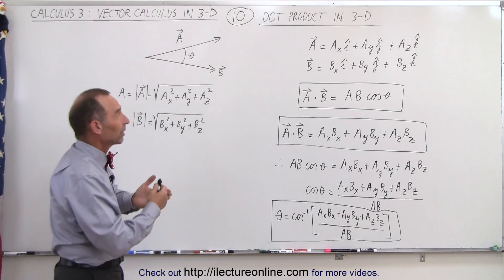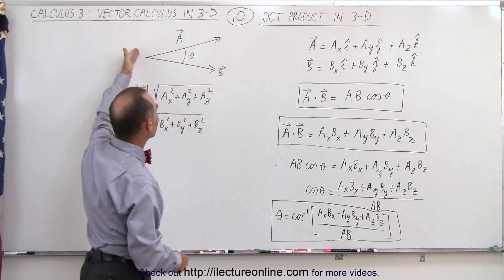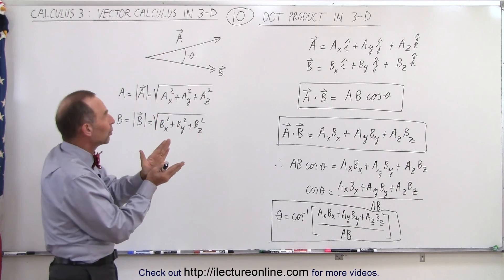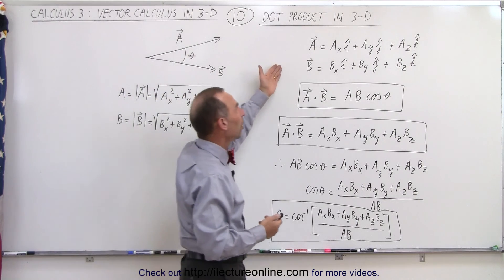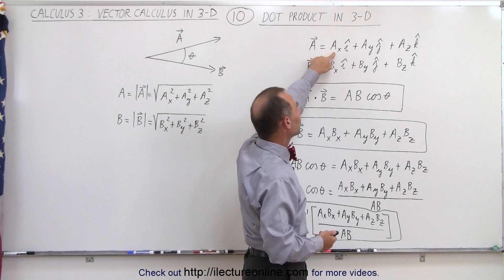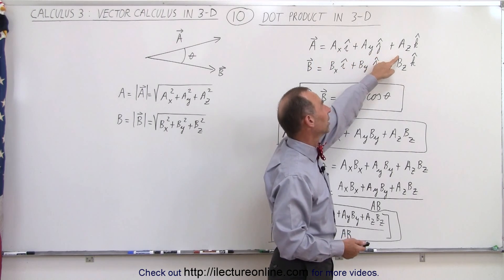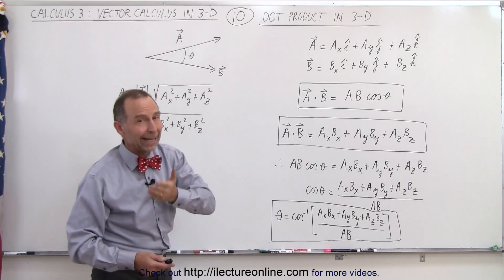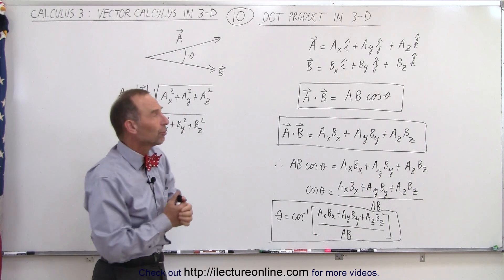So let's say we have two vectors, vector A and vector B. Here's a pictorial of the two vectors, and they have an angle between them. Let's call the angle between them theta. The vectors are defined as the sum of the x, y, and z components. We have the x component of A in the i-direction, the y component of A in the j-direction, and the z component of A in the k-direction. Remember that i, j, and k are synonymous to the x, y, and z unit vectors.